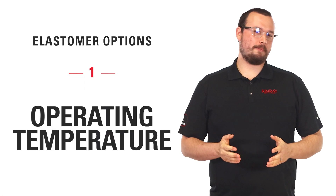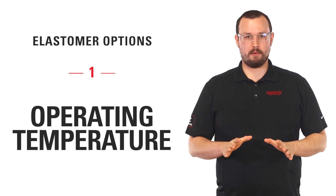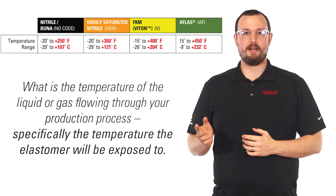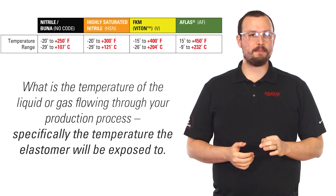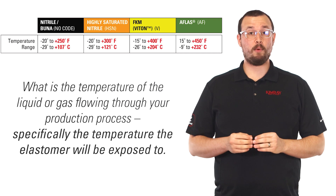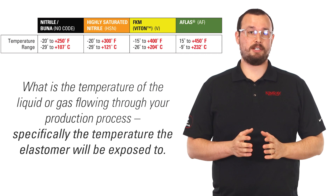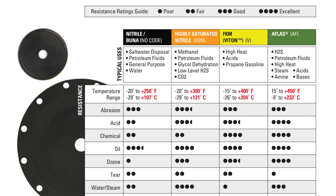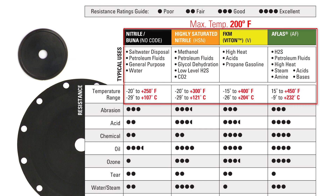To determine which elastomer to select for a given application there are three primary data points needed. First is operating temperature. What is the temperature of the liquid or gas flowing through your production process — specifically the temperature the elastomer will be exposed to? This is the first point you can use to narrow your selection. Production running at a maximum temperature of 425 degrees Fahrenheit may be limited to a single elastomer option, however based on temperature alone a 200 degree Fahrenheit operating temperature could still use any of these options.